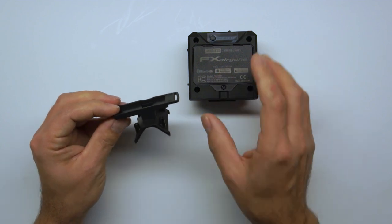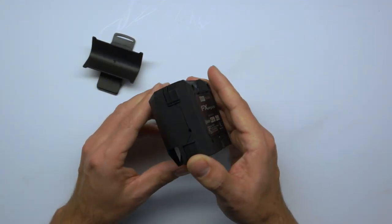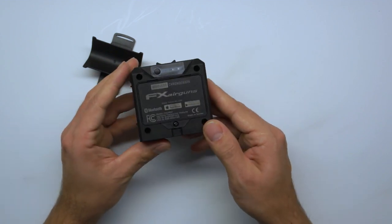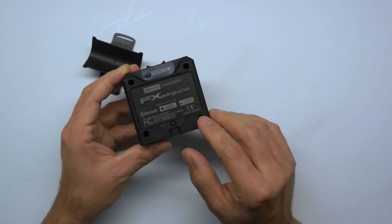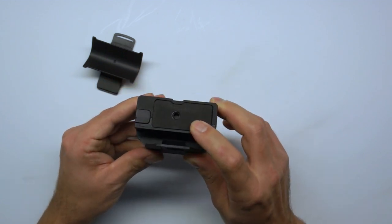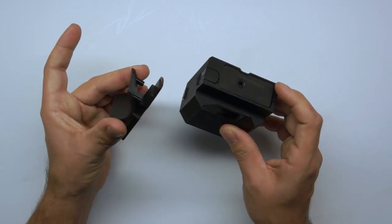Although installing this requires opening up the plastic housing of your chronograph, it's very easy. It's only removing four screws and replacing the standard mounting plate with this one.